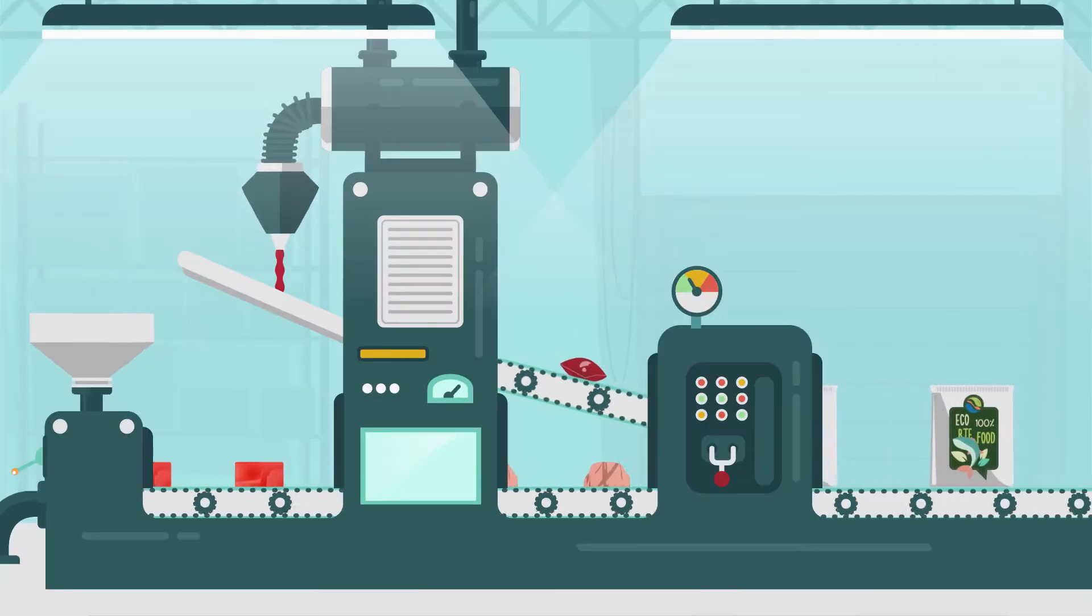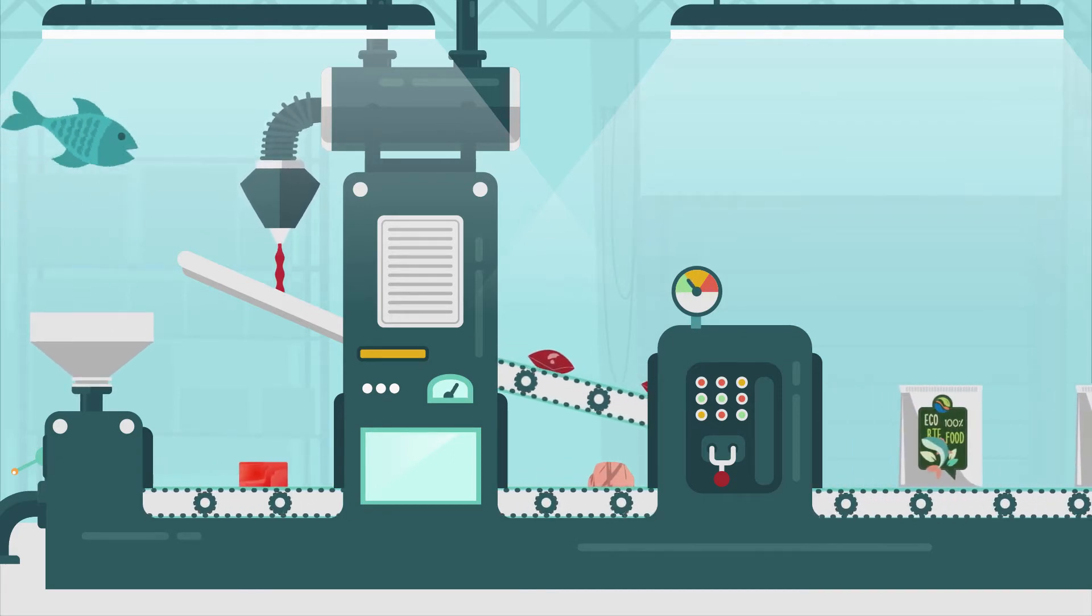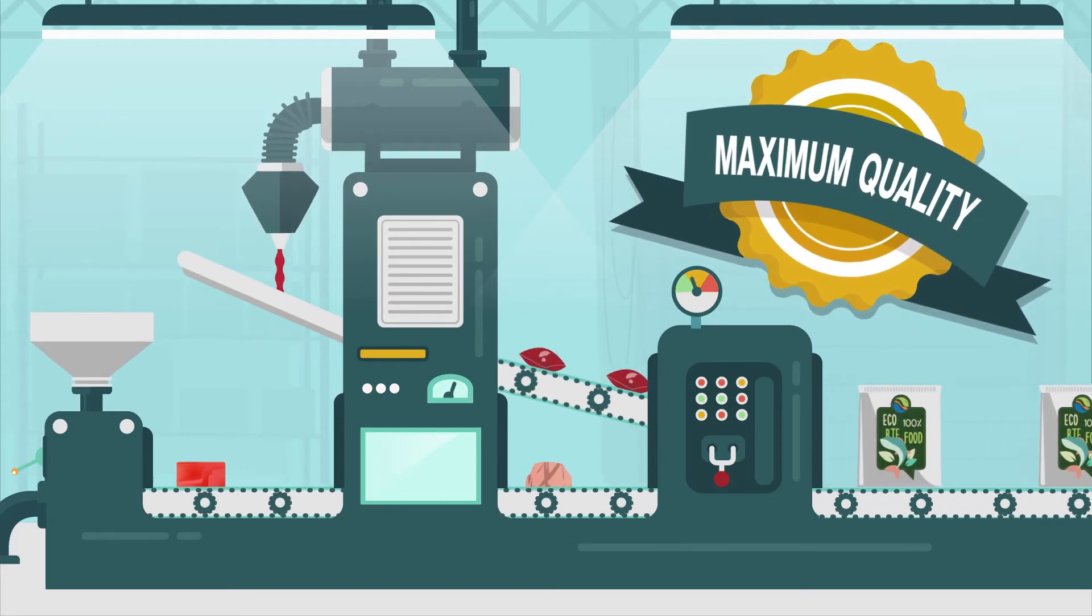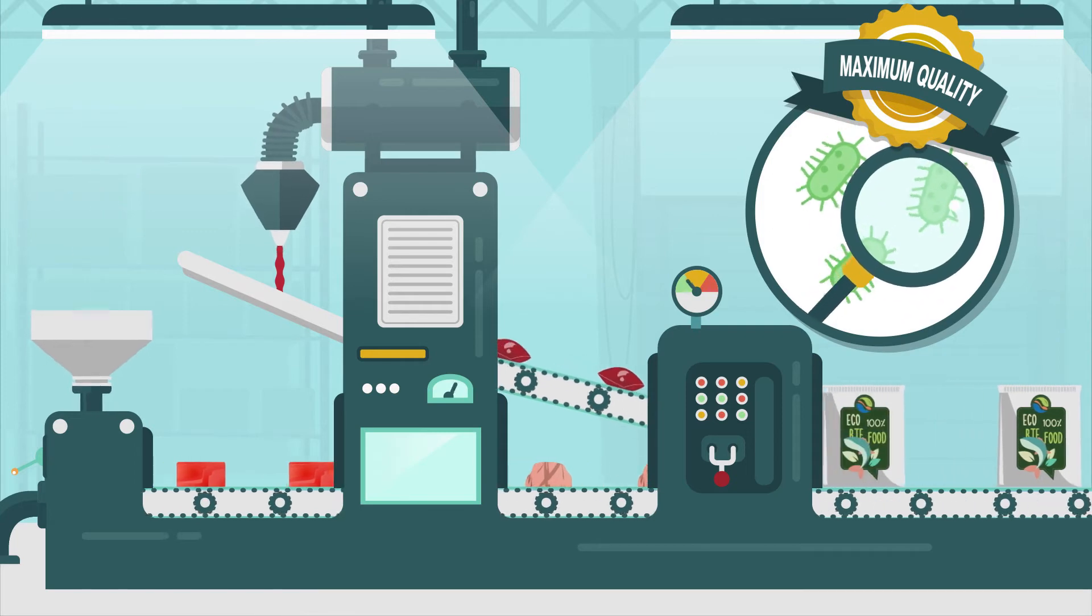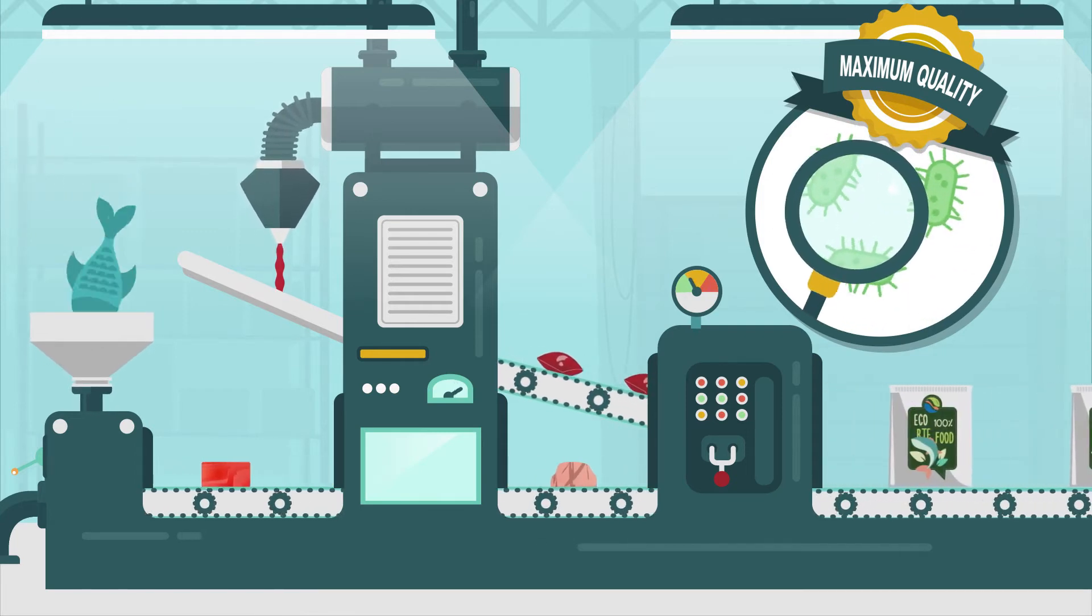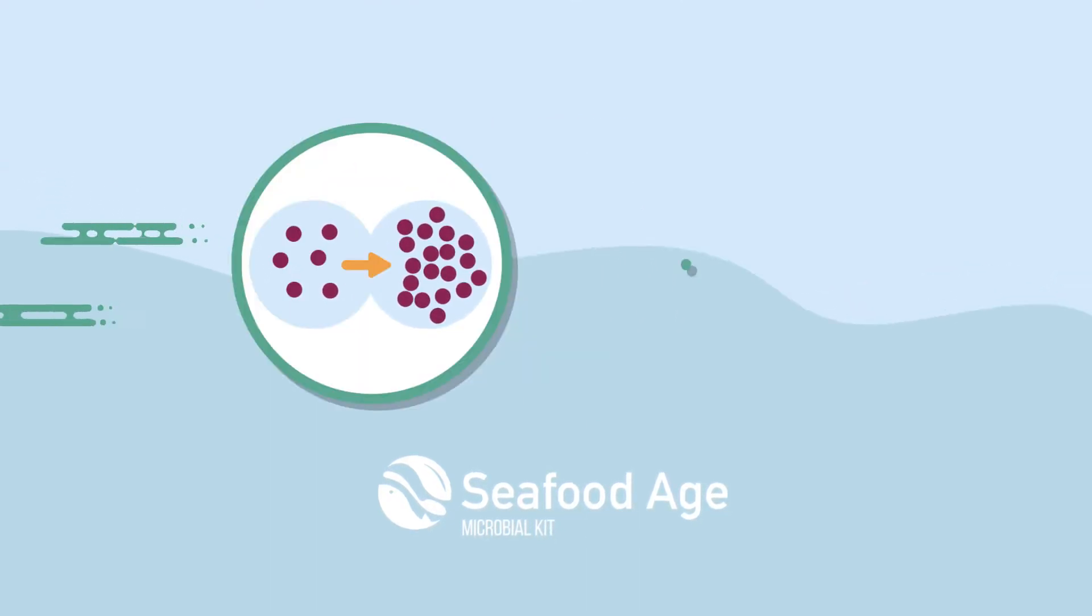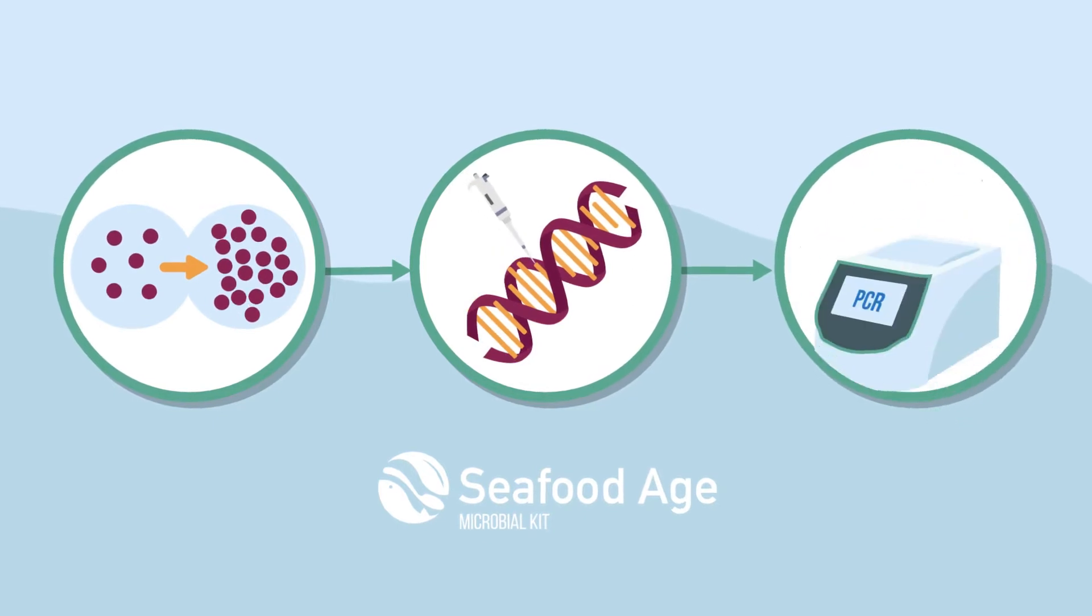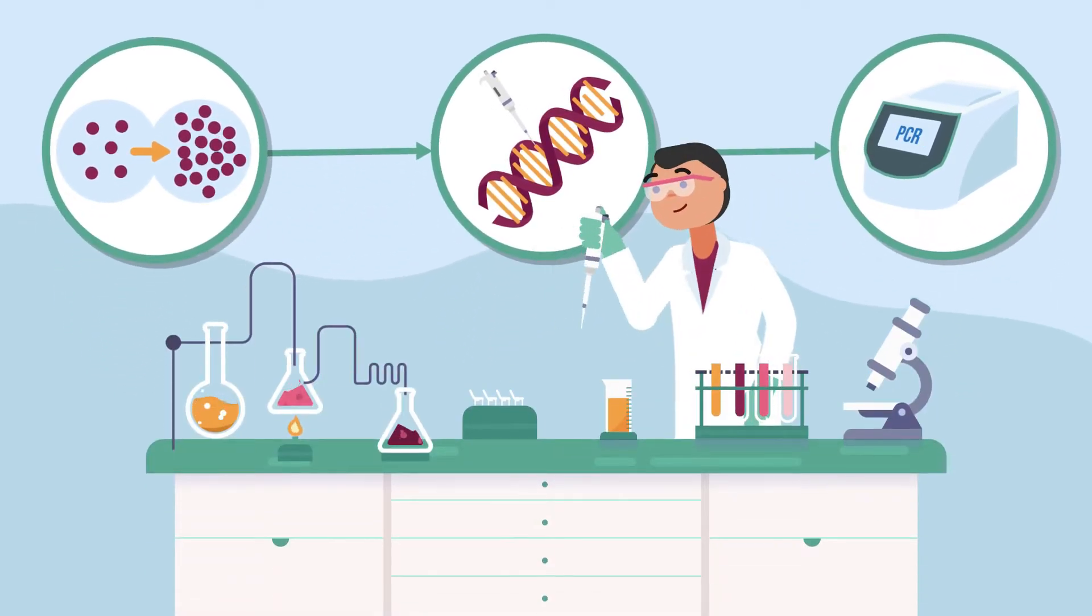The ready-to-eat seafood product is produced and packaged by the food industry, complying with food grade standards to ensure maximum quality and safety. The industry can use the microbial kit we have developed in the Seafood Age project. Our kit consists of selective enrichment followed by simple DNA extraction and detection by real-time PCR.